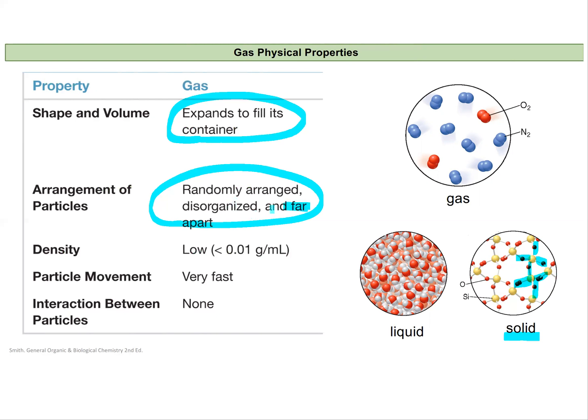Because these are so far apart, the density will be very low. There'll be very little mass for a given volume because there is so much extra empty space. They move very, very fast, and we assume that they do not interact with each other.